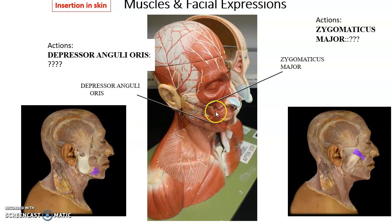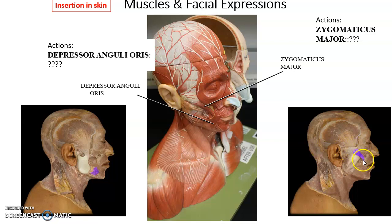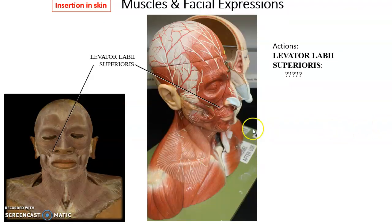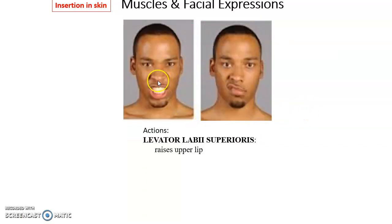The zygomaticus major runs from the zygomatic bone to the corner of the mouth. The depressor anguli oris runs from the mandible to the corner of the mouth. When the depressor anguli oris contracts, it pulls the ends of the mouth down, giving a frown. When the zygomaticus major contracts, it pulls up on the corners of the mouth, giving a smile. The levator labii superioris inserts into the upper lip and raises it.